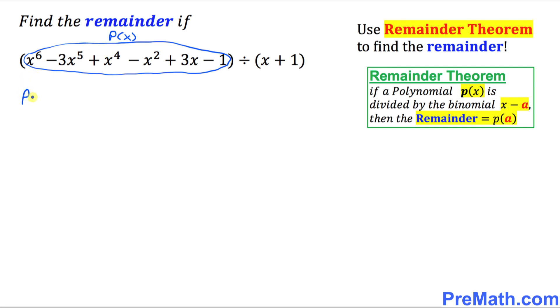So I am going to write down p(x) equal to this big long string. Just put down x^6 minus 3x^5 plus x^4 minus x^2 plus 3x minus 1.